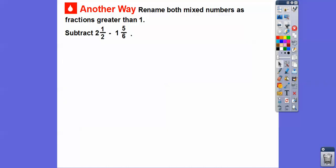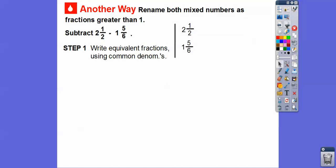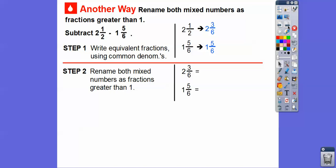Here's a different way. We can rename both mixed numbers as fractions greater than one. We're going to subtract two and a half minus one and five-sixths, writing the fractions using common denominators. This time I'll use six as the common denominator. Two goes into six three times, so we multiply by three over three — one times three is three, two times three is six. Now we can't do three minus five without borrowing, so we're going to rename both mixed numbers as fractions greater than one.